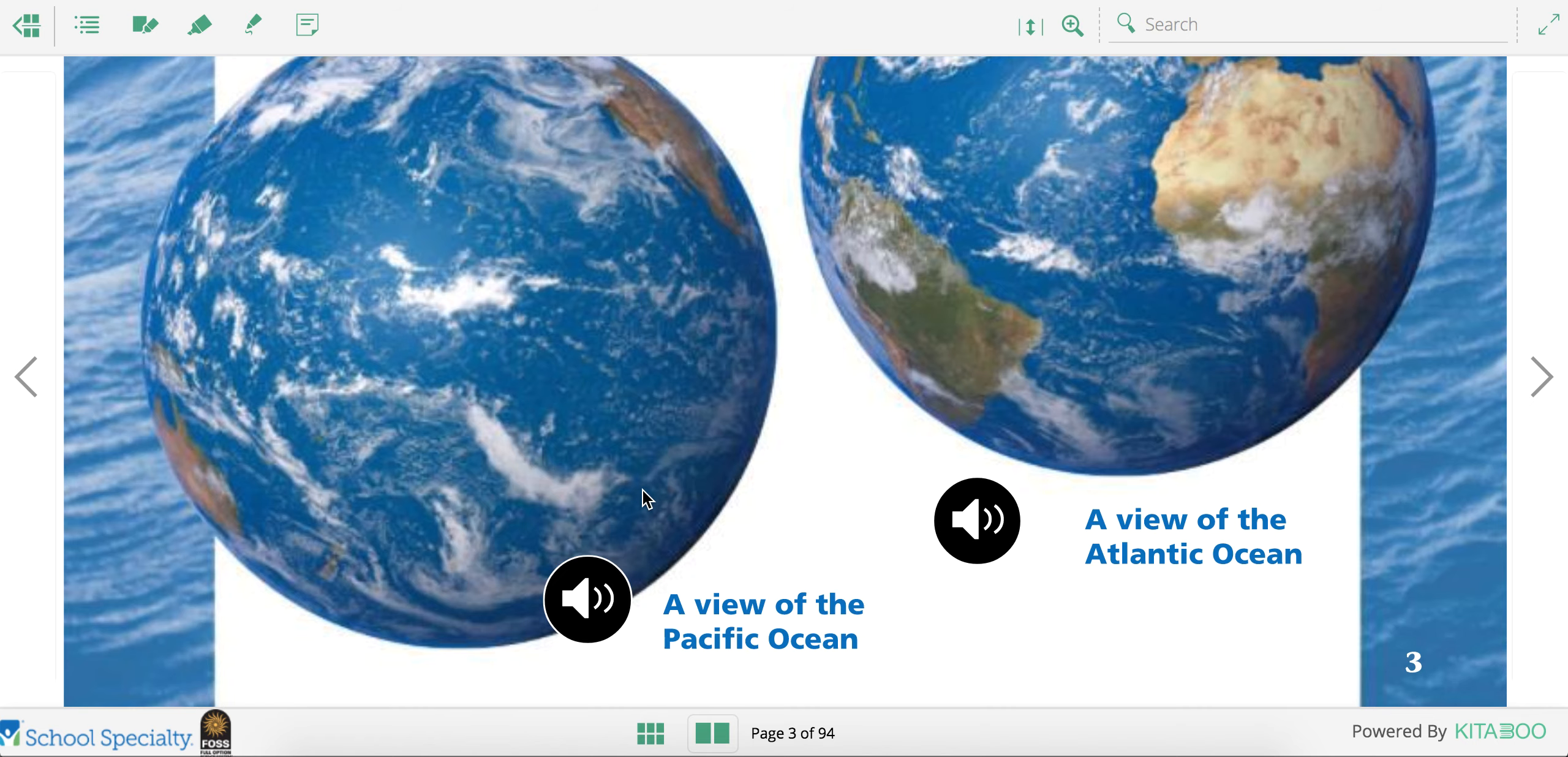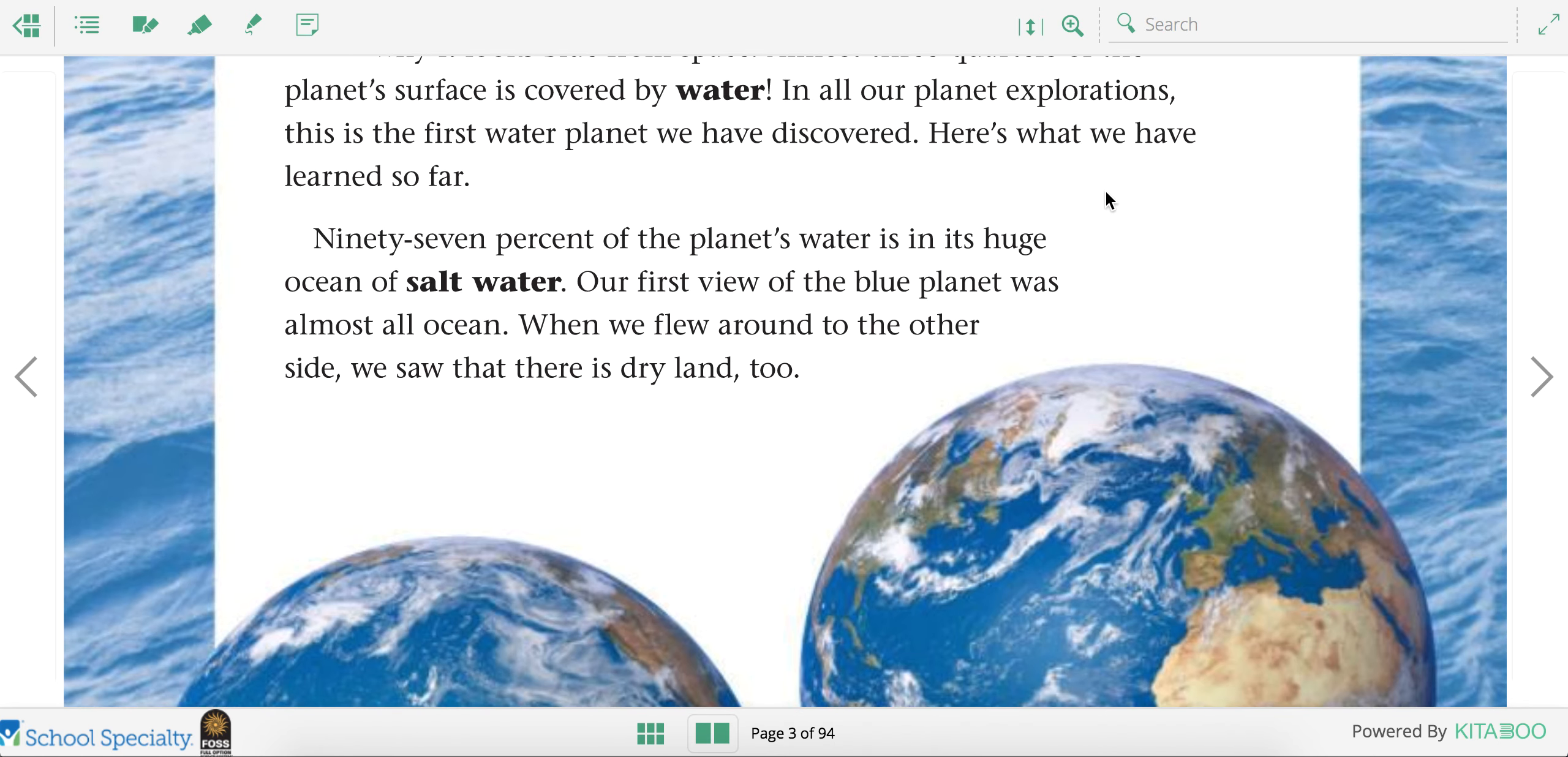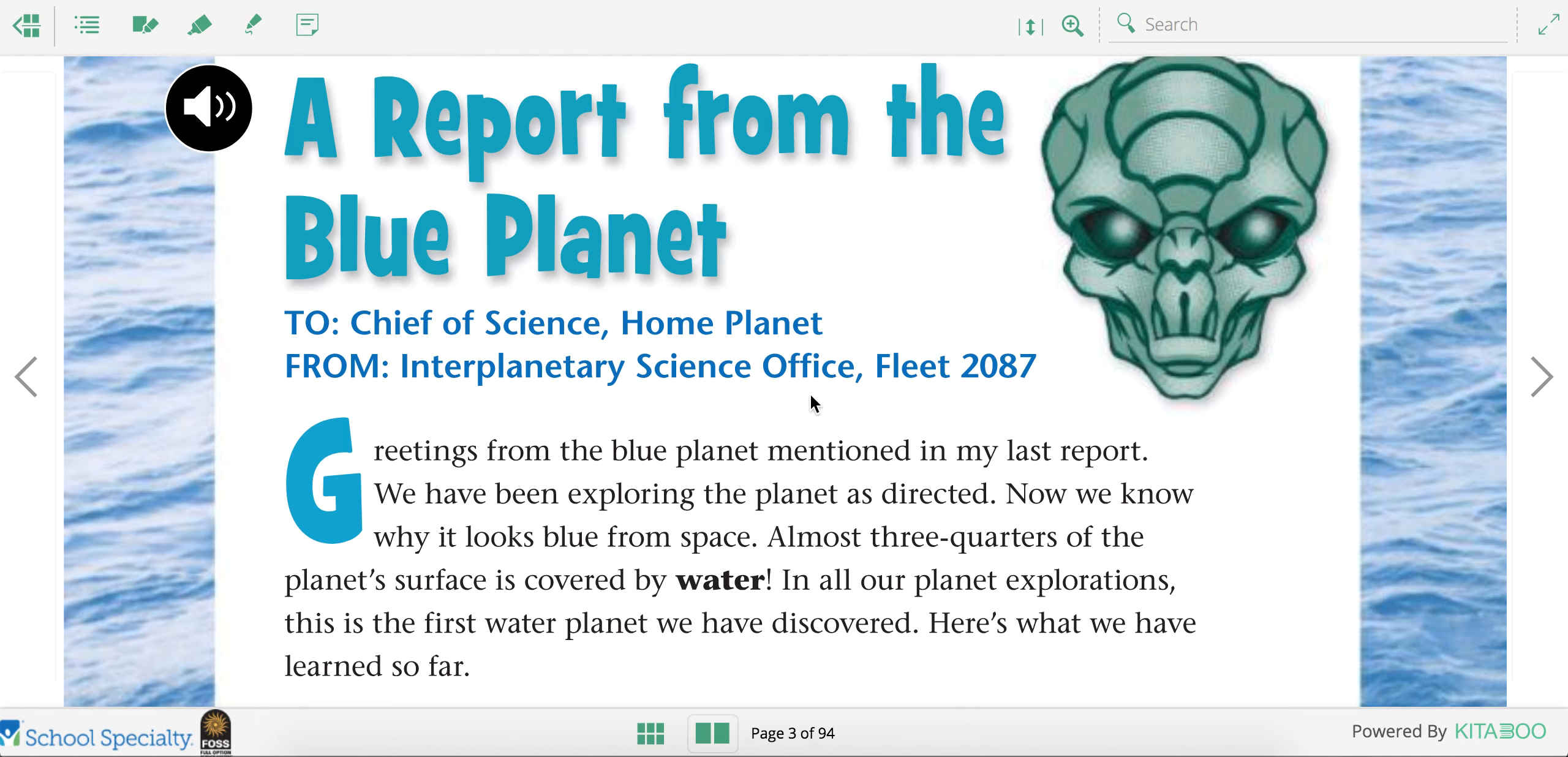He's seeing planet Earth for the first time. Here's a view of the Pacific Ocean on Earth and a view of the Atlantic Ocean on Earth. If you were seeing Earth for the first time, what do you think you would notice? There's a lot of what color?